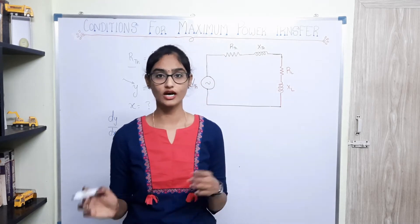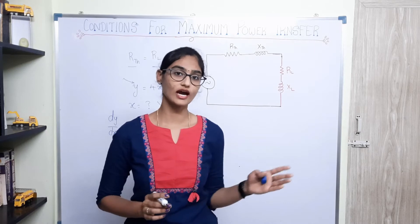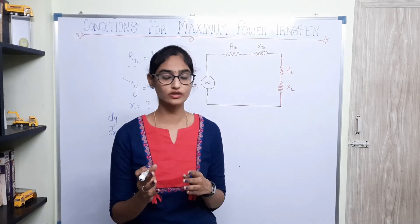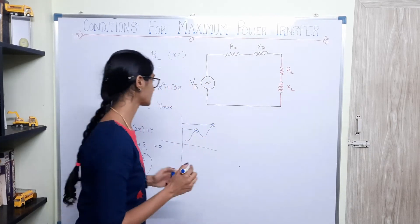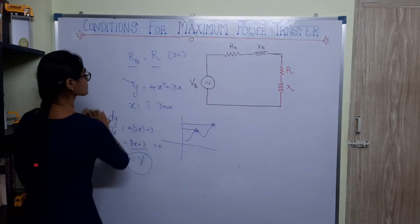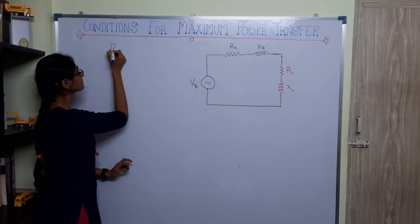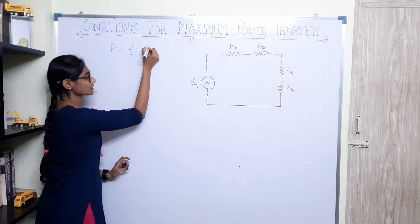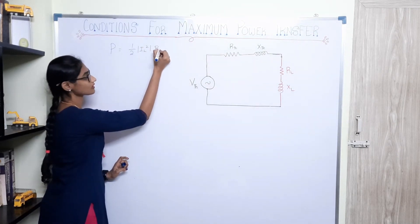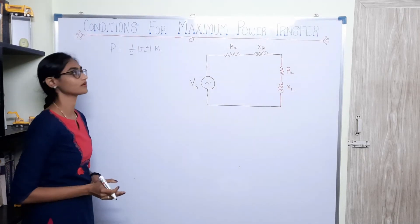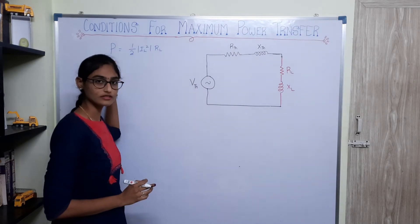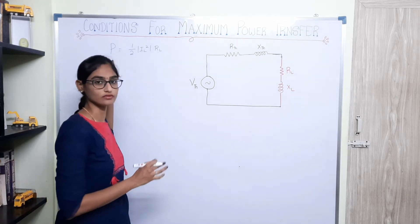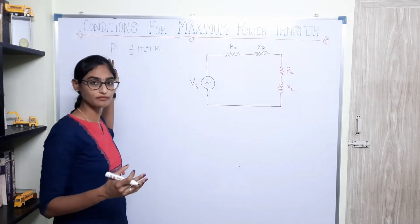Power is I²R. When you have an AC circuit, the average power will be half times the magnitude of I squared times the load resistance. So the power is: P = ½ · |IL|² · RL. When we find the derivative of this and equate it to 0, we can find the value of RL for which maximum power is achieved.